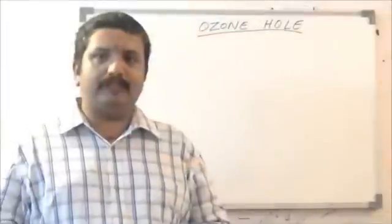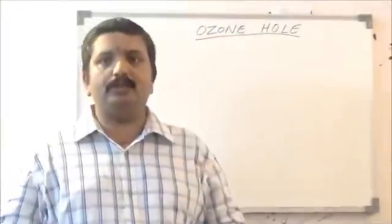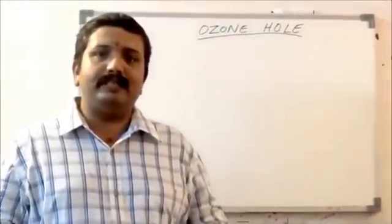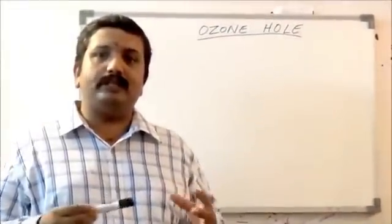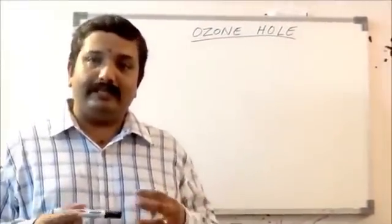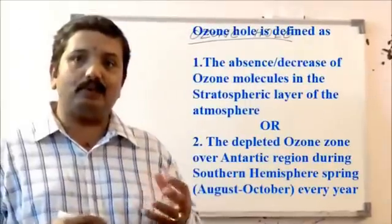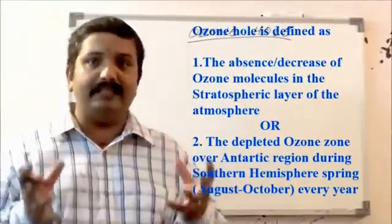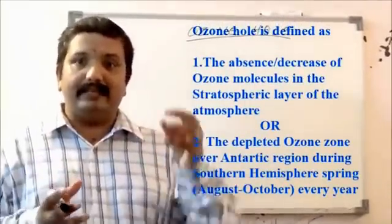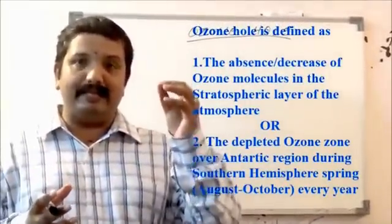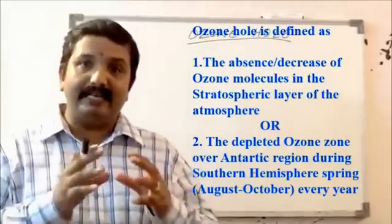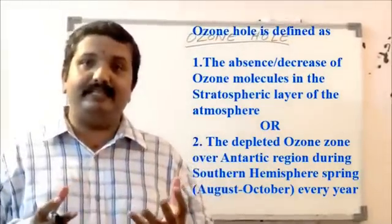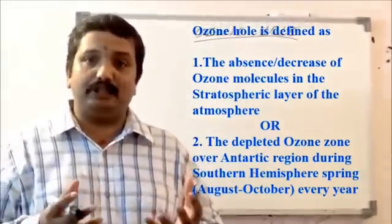In this class, we are going to see about the ozone hole. Ozone hole does not mean that there is a hole in the ozone. It means the absence of ozone molecules in certain areas around the Earth, happening in the atmosphere and in a very specific layer of the atmosphere, namely the stratosphere.